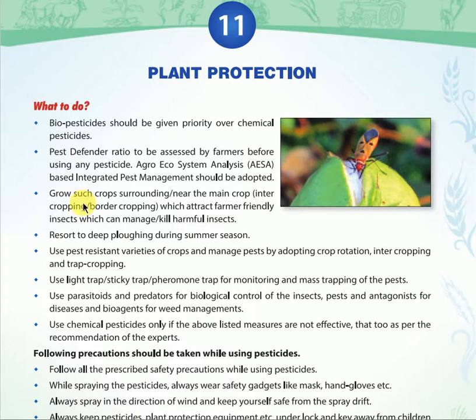Plant protection is a very easy chapter and these schemes are very easily remembered. Biopesticides should be given priority over chemical pesticides. The defender ratio assessed by farmers before using pesticides, and agro ecosystem analysis-based integrated pest management should be adopted.